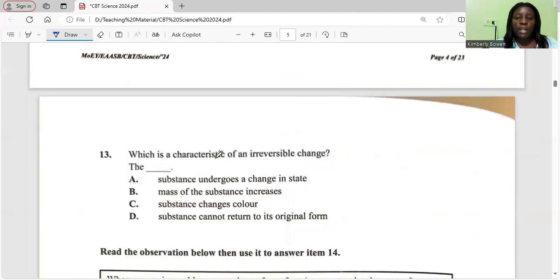Which is a characteristic of an irreversible change? The substance undergoes a change in state, the mass of the substance increases, the substance changes color, or the substance cannot return to its original form. That's the correct answer. The change cannot be reversed.